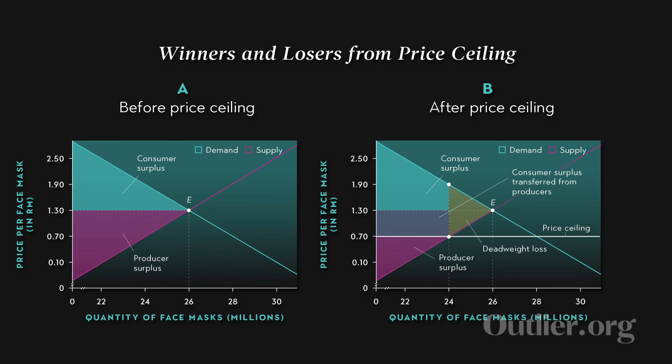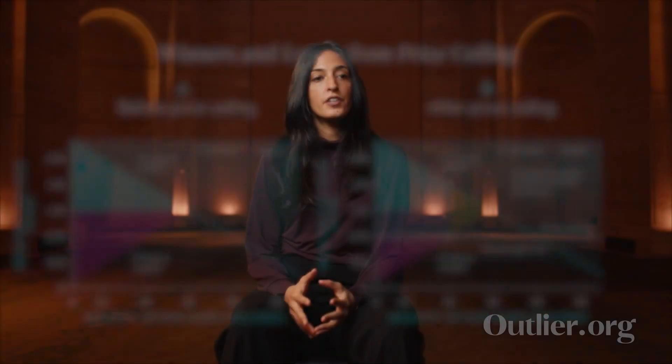For producers, it's more of an unequivocal loss. Some producers are excluded from the market because of the lower quantity being supplied, and for existing producers, the price they receive is lower than it would have been without the price ceiling. Producer surplus is reduced, and net total surplus has fallen compared to the absence of a price ceiling — which we can see visually from the deadweight loss triangle. So there is an inefficiency generated by the existence of the price ceiling.